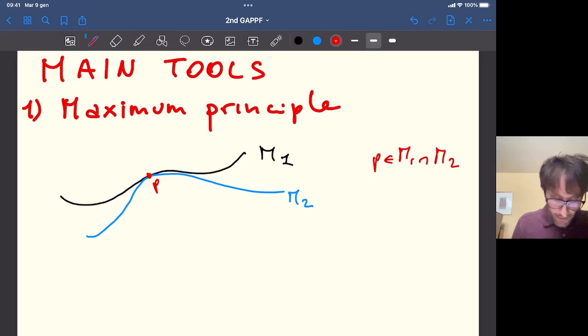In this point there's a specific configuration. So the normal to the first hypersurface equals the normal to the second one, so in particular one is tangent to the other, and around this point the two hypersurfaces are separated.